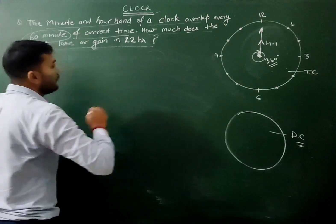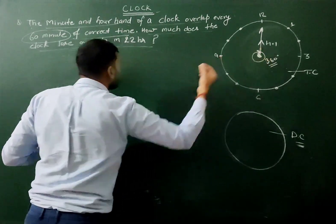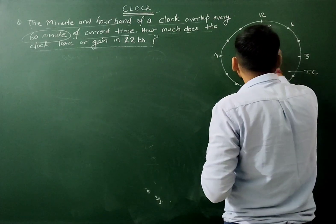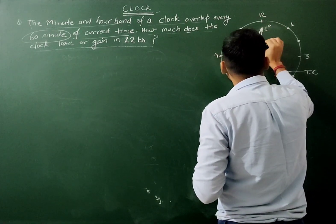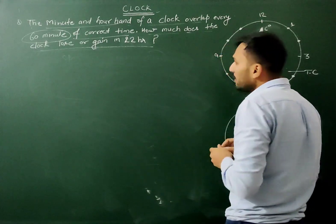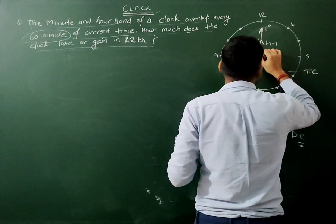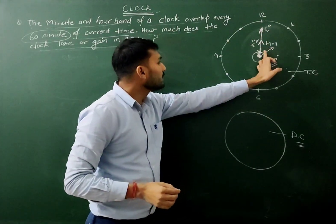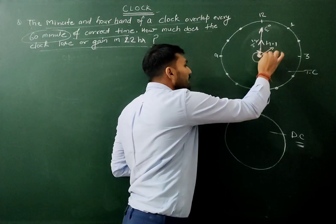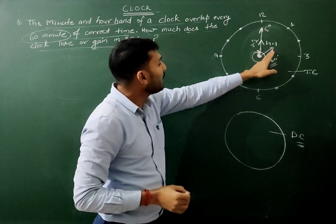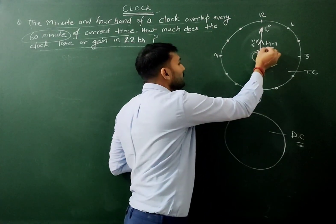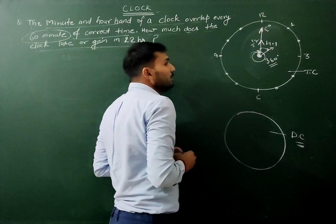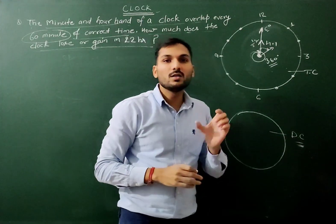In a true clock, the speed of the minute hand is 6 degrees per minute and the speed of the hour hand is 0.5 degrees per minute. After one hour, the minute hand covers 60 minutes of distance while the hour hand only covers 5 minutes of distance. So the gain by the minute hand over the hour hand in 60 minutes is 55 minutes. This means to gain 60 minutes, the minute hand needs to run 60 divided by 55 times 60 minutes.